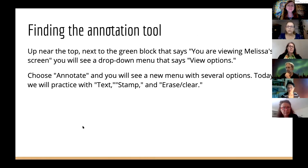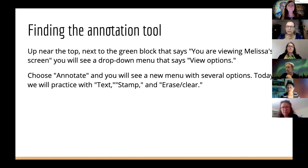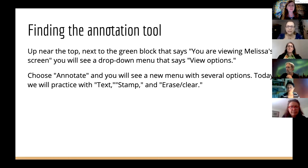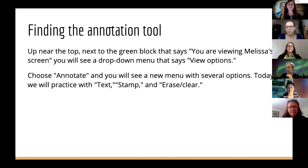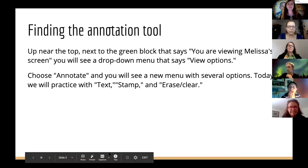So to find the tool, for those of you who may not know where it is: up near the top, there's a green block that probably says you're viewing Melissa's screen. You will see a dropdown menu that says 'View Options,' then choose 'Annotate,' and there's a menu with several options. We'll practice with text, stamp, erase, and clear — which are very important.